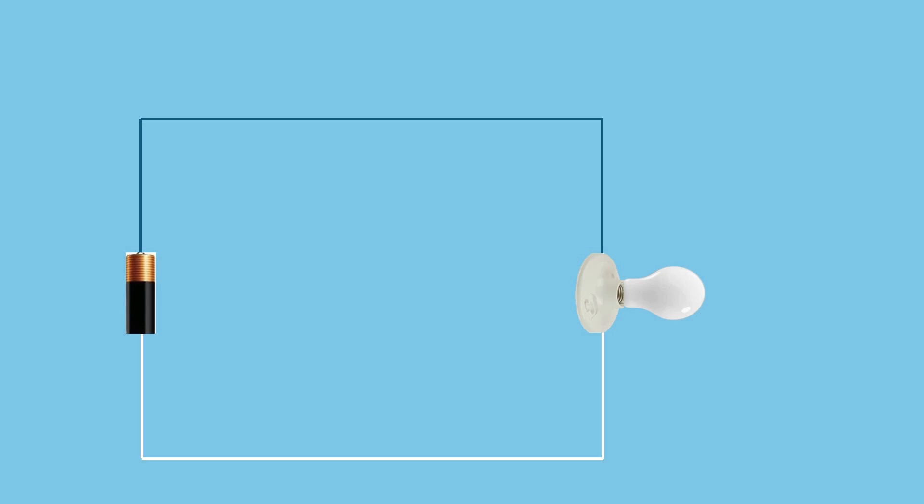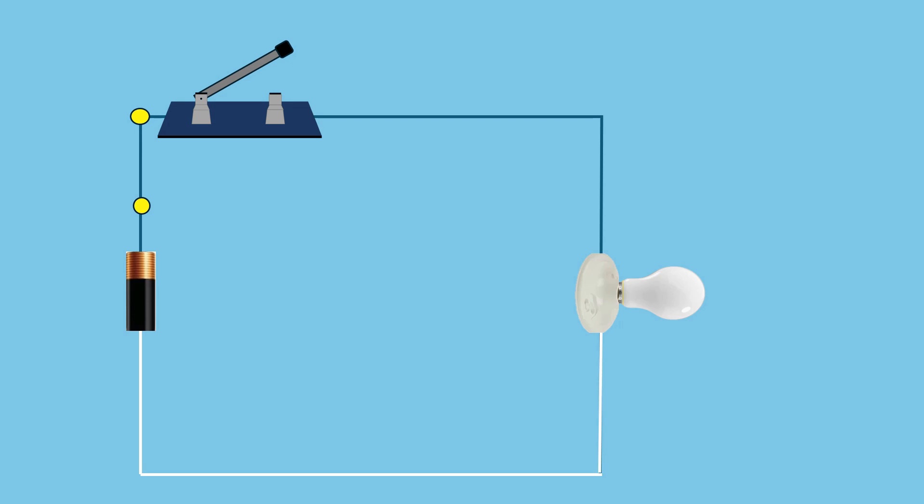And let's throw in a switch to control the flow of this electricity. Let me explain one thing. In this diagram, you see two yellow dots. These represent electricity. When the dots in my animations are not moving, it means the circuit is energized, but electricity is not flowing. Now let's close the switch. See how electricity flows from the battery through the switch to the light and back to the battery? When we open the switch, the flow stops because the circuit is broken or open.